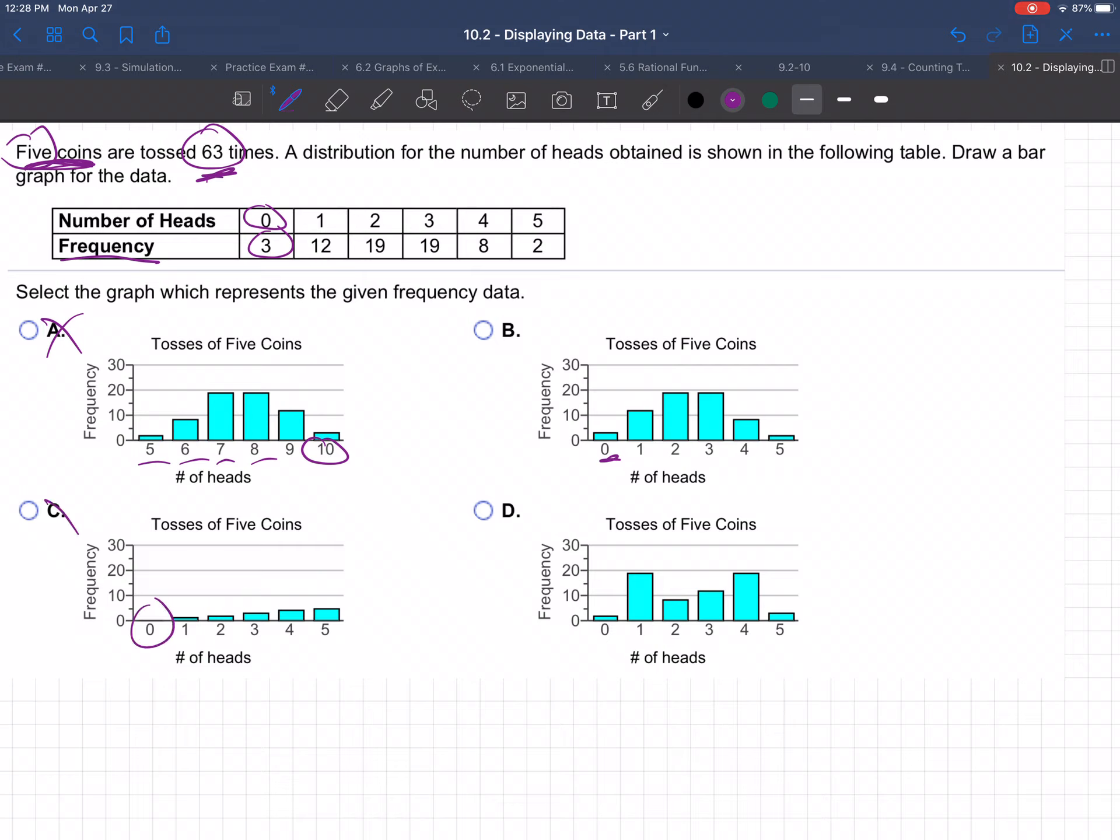Zero heads, I don't see any. Zero heads, that looks kind of close. One head here, they have almost 20 times, like 18 or 19 times? One head only happened 12 times.